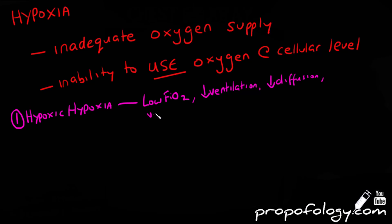Diffusion impairments such as that seen in pulmonary edema and pulmonary fibrosis, where the oxygen isn't actually able to pass through the alveolus and into the bloodstream. You can also see hypoxic hypoxia in ventilation perfusion mismatch disorders such as COPD, asthma and lower respiratory tract infections.